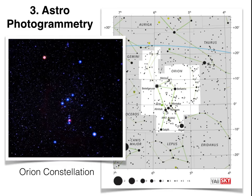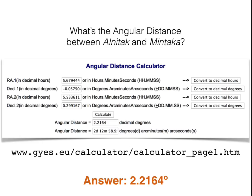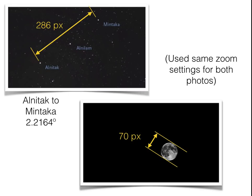The third method is astrophotogrammetry. The stars are in very precise positions — they've been studied for centuries. Here's the constellation Orion. Let's focus on the three stars of the belt: Alnitak and Mintaka are the left and right ends, and we know the right ascension and declination with great precision. If you plug those into a calculator, you get the angular distance between those two stars — about 2.2 degrees. Take your camera at a specific zoom setting, take a picture of Orion's belt, then take a photo of the moon without changing the zoom, measure the pixels, and you can find the moon's angular diameter — about 0.54 degrees.